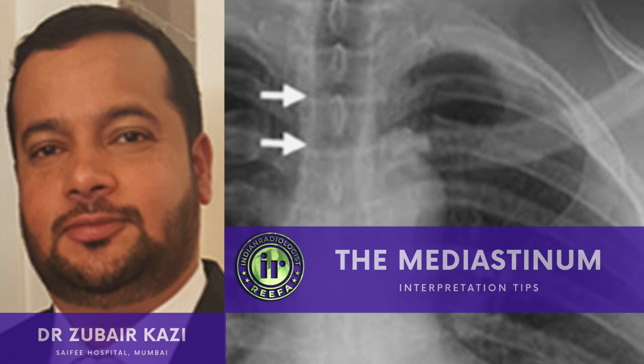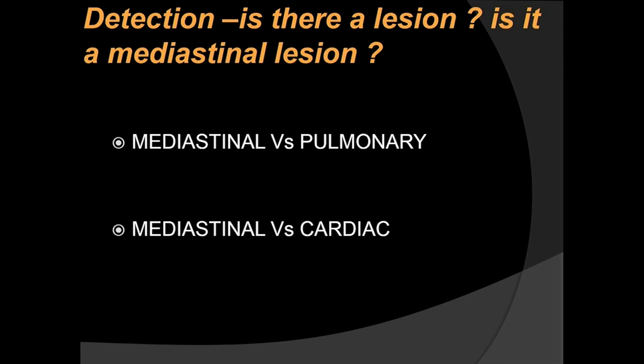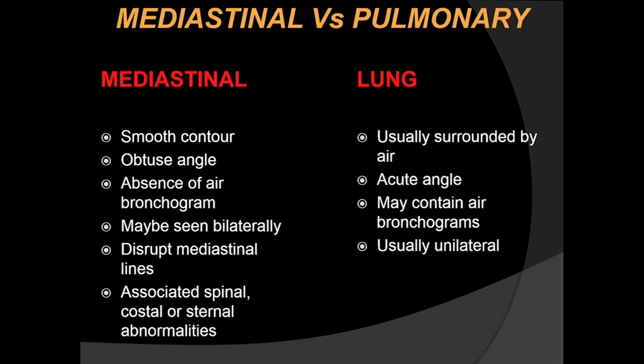Once you've identified the lesion, we have to be sure: is it a mediastinal lesion or is it something else? The two main lesions we need to differentiate it from are pulmonary lesions and cardiac lesions — mediastinal versus pulmonary. There are a few points which may help us: mediastinal lesions have a smooth contour and they usually form an obtuse angle with the surface.